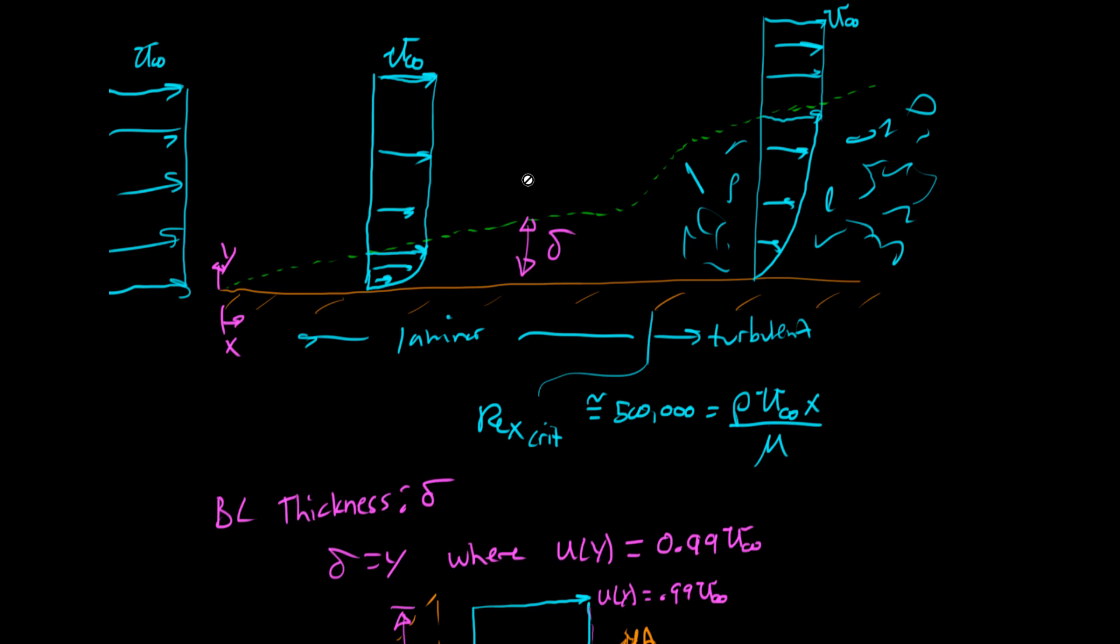One of the weird things about external flow compared to internal flow is what causes turbulence. Remember, in an internal flow, it was over a certain Reynolds number, it happened. Well, that's the same for external flow. But with internal flow, if it was going to be turbulent, it started right away. If we had a diameter that caused the Reynolds number to be greater than 2100 or 4000, we would get turbulent flow immediately in that cylinder or in that pipe.